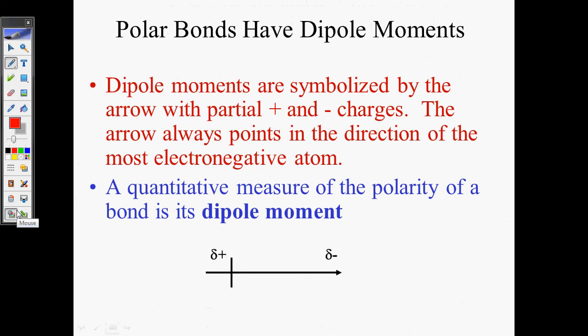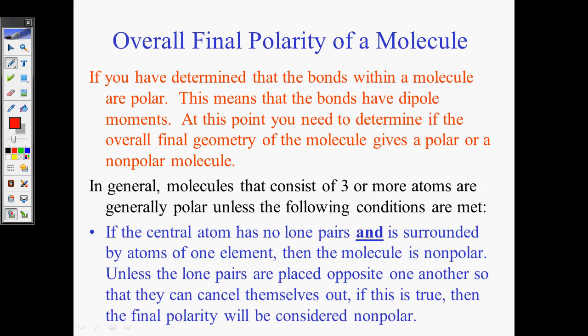Polar bonds have dipole moments. We've already gone over this. Dipole moments are symbolized by partial positive and negative charges. The arrow must only be in the direction of the most electronegative atom. We did this. We already have notes on it. It's already a video on it. A quantitative measure of the polarity of a bond is its dipole moment.